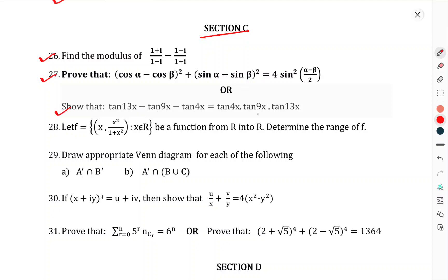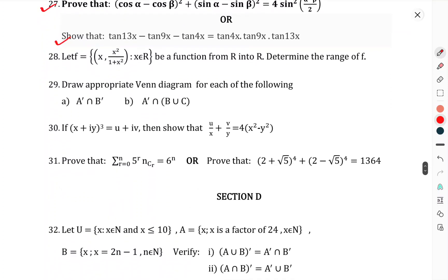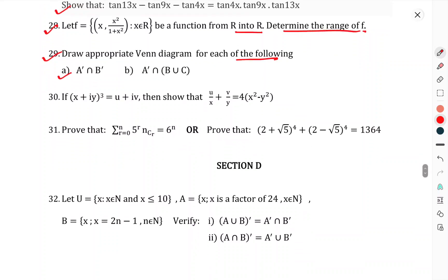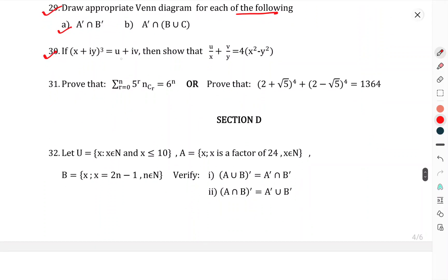Now we come to Section C. Question 27: Find the modulus of (1 + i)/(1 - i) minus (1 - i)/(1 + i). Question 28: Prove that (cos α - cos β)² + (sin α - sin β)² equals 4 sin²((α - β)/2). Or prove that tan 13x - tan 9x - tan 4x equals tan 13x tan 9x tan 4x. Question 29: Let f be a function x such that (x, x², 1/x) where x belongs to real numbers, be a function of R to R. Determine the range of function f. Question 30: Draw the appropriate Venn diagram for each of the following. Question 31: If (x + iy)³ equals u + iv, prove that u/x + v/y equals 4(x² - y²). Prove that Σ(r=0 to n) 5^r × nCr equals 6^n, or prove that (2 + √5)⁴ + (2 - √5)⁴ equals 1364.